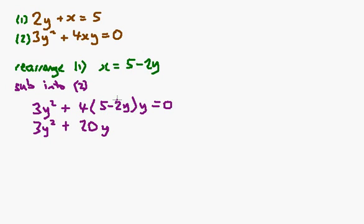And I've got 4 times minus 2y is minus 8y, times by the y, so I get minus 8y squared is equal to 0.